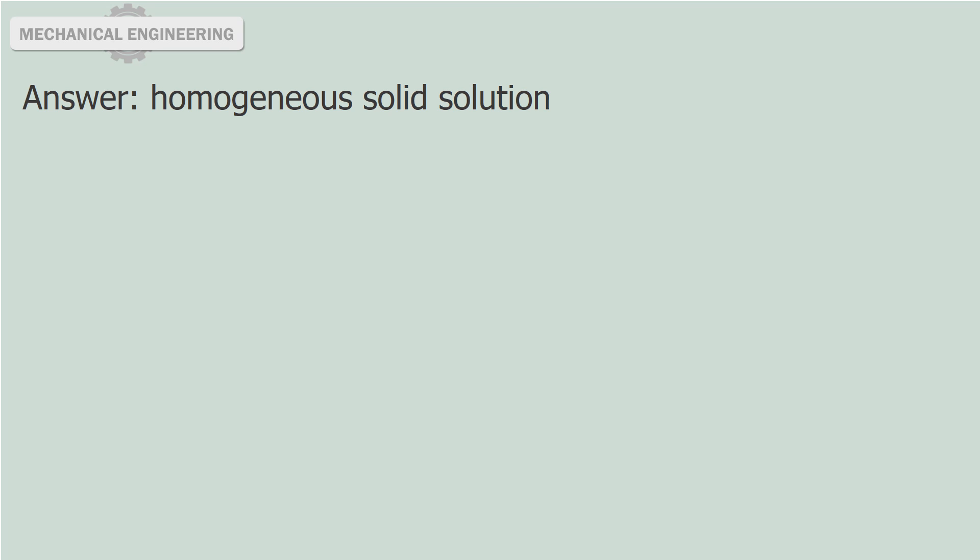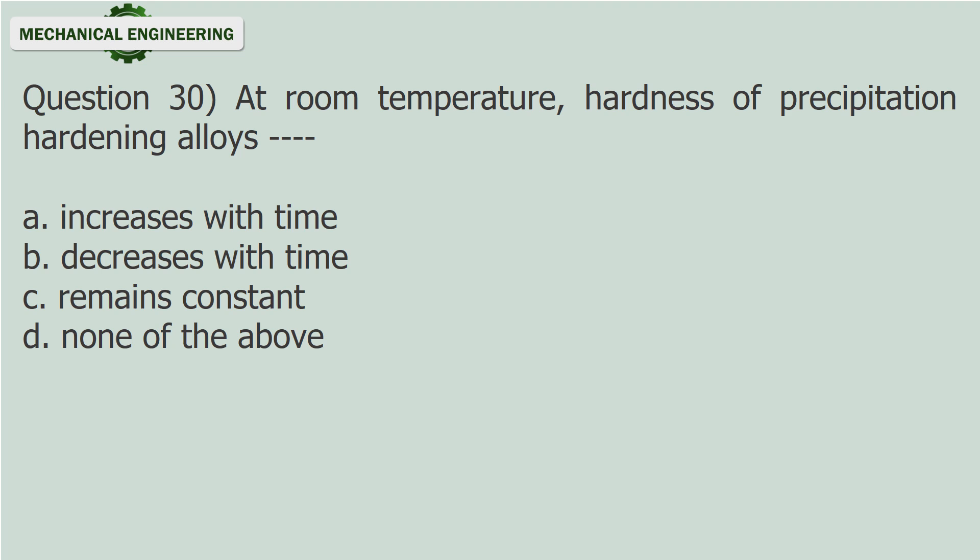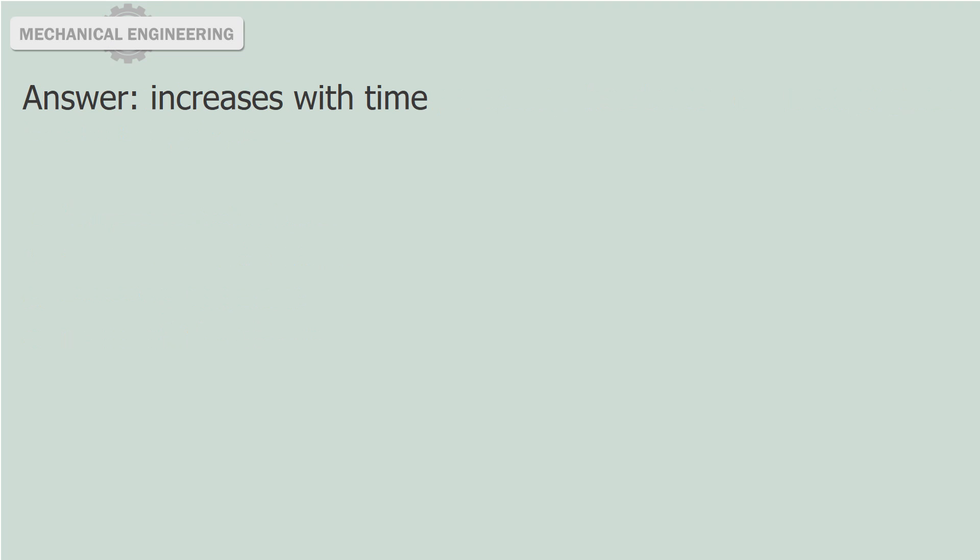Question 30: At room temperature, hardness of precipitation hardening alloys — (fill in the blank). A. Increases with time. B. Decreases with time. C. Remains constant. D. None of the above. Answer: Increases with time.